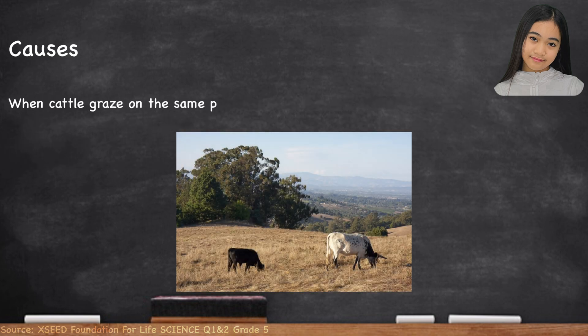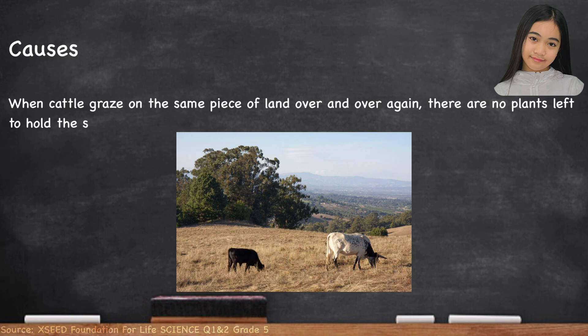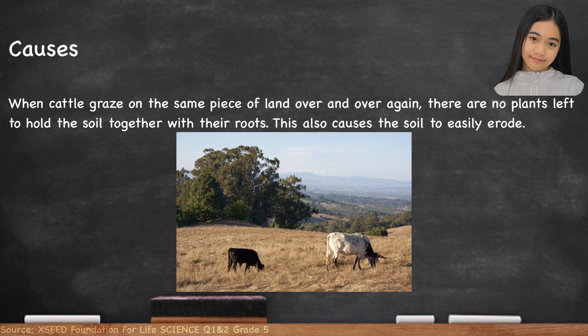When cattle graze on the same piece of land over and over again, there are no plants left to hold the soil together with their roots. This also causes the soil to easily erode.